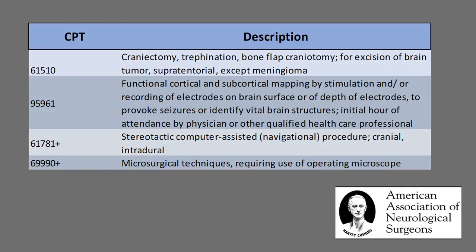The complete set of procedural codes employed to describe the awake craniotomy for resection of a supratentorial mass utilizing cortical mapping, computer navigation, and microscopic techniques are as follows: 61510 for the craniotomy and mass resection; 95961 for the functional cortical mapping; 61781 for the computer-assisted stereotactic navigation; and 69990 for the microsurgical techniques requiring the use of an operative microscope.